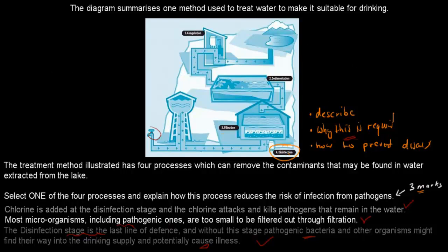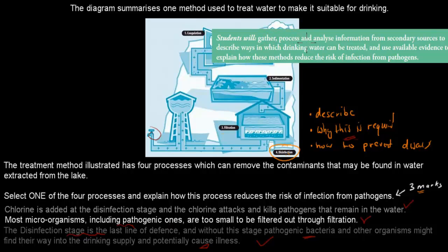And where does this come from? Well, this comes from this dot point: students will gather, process, and analyze information from secondary sources to describe ways in which drinking water can be treated and use available evidence to explain how these methods reduce risk of infection. So the actual question says explain. We select one of the four processes and explain how this process reduces the risk of infection from pathogens. So it's actually only asking you to explain, but if you look at the marks, it's worth three marks. It's always good to also just include the describe part as well, because you never know. Just throw that quick description in as well.